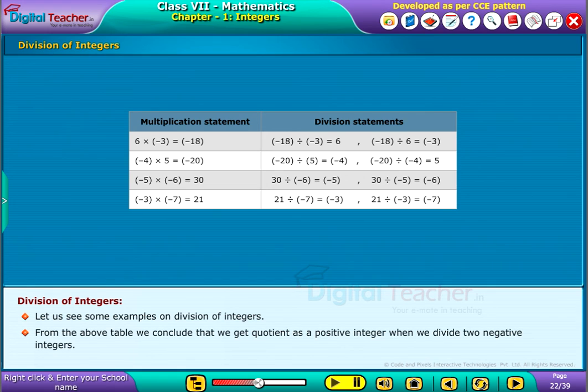From the above table we conclude that we get quotient as a positive integer when we divide two negative integers.